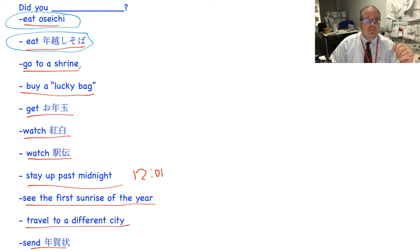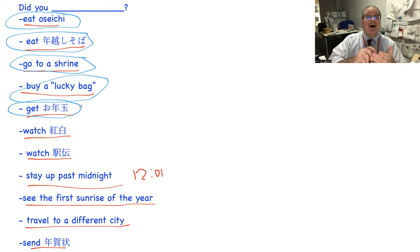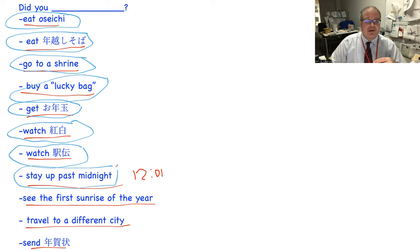Okay my answers: I ate oseichi, I ate kuromame and ebi fry, it was good. I did not eat toshikoshi soba. I did not go to the shrine. I did not buy a lucky bag, I don't like lucky bags. I did not get otoshidama, I had to give otoshidama. I did watch kohaku, I like kohaku. I did not watch ekiden, I don't like ekiden.